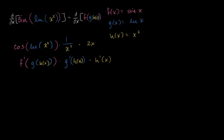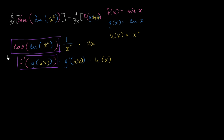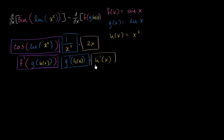To make everything clear: the cosine expression in purple is f'(g(h(x))) expressed concretely and abstractly. The 1/x² part is g'(h(x)) expressed concretely and abstractly. And the 2x is h'(x), again expressed both concretely and abstractly.